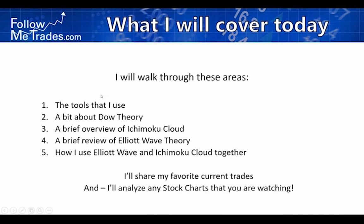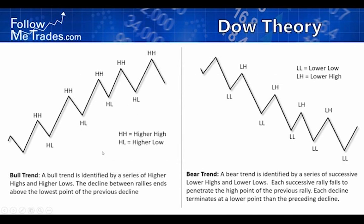Let's talk a bit about Dow Theory. This is a simple version. Charles Dow — a really interesting guy — founded the Wall Street Journal and wrote a series of articles in the 1890s about his thoughts on how the market moves. Those articles were compiled into books and it's called Dow Theory. One of the things he noticed was about trends. He said price does not move in a straight line, and traders want to know: is the trend still going or has it changed?